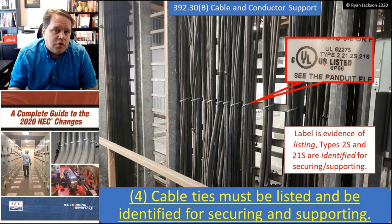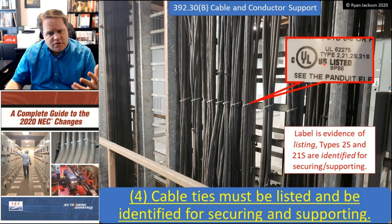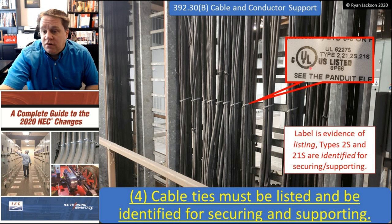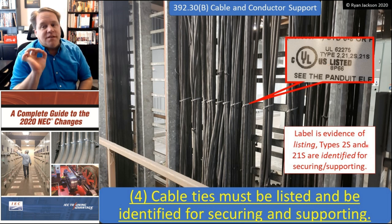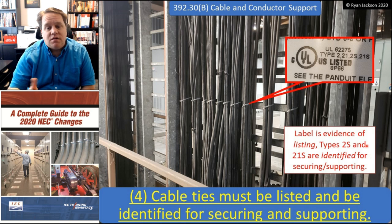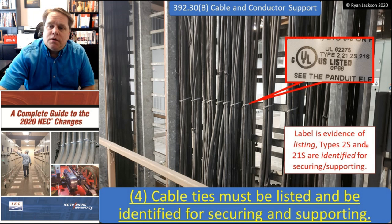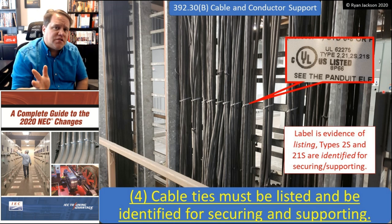The change here is for the cable ties — cable ties now have to be listed and identified for securing and supporting. This is actually a little more complex than it sounds. The cable tie has to be a listed product — we know what that means. Here on the package of my cable ties it says it's listed to Canadian standards and U.S. standards. However, that does not mean it complies with the rest of the sentence, because it also has to be identified for securing and supporting.